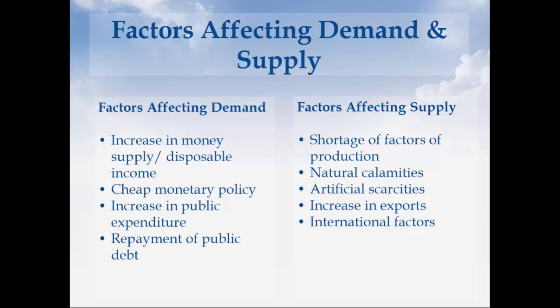First is increase in money supply or disposable income — where there is more money for the public to spend, demand is very high and not met by supply, leading to a price hike. Cheap monetary policy is where banks lend money at a very low rate, again leaving the public with more money to spend. Increase in public expenditure leads to higher consumption, pushing prices up. And when the government repays money borrowed from the public, it again leaves the public with more money, leading to inflation.